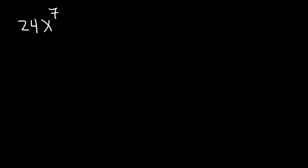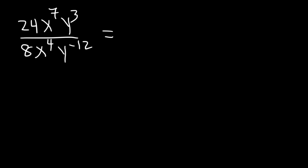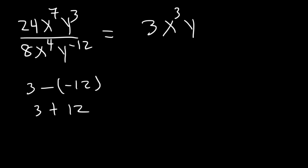Try this: 24x to the 7th y to the 3rd, divided by 8x to the 4th y to the negative 12th. Divide 24 by 8 to get 3. For the x variables: 7 minus 4 is 3, giving x cubed. For the y variables: 3 minus negative 12 is the same as 3 plus 12, so this becomes y to the 15th. The final answer is 3x cubed y to the 15th.